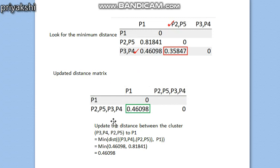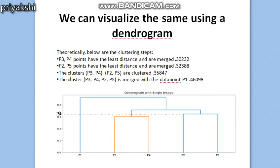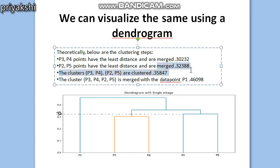The distance between {p2,p5,p3,p4} and p1 is 0.46098. After combining these, we get a single cluster. To visualize using a dendrogram: first p3 and p4 merged at 0.30232, then p2 and p5 merged at 0.32388, then {p3,p4} and {p2,p5} merged at 0.35847, and finally p1 joined the cluster at 0.46098.